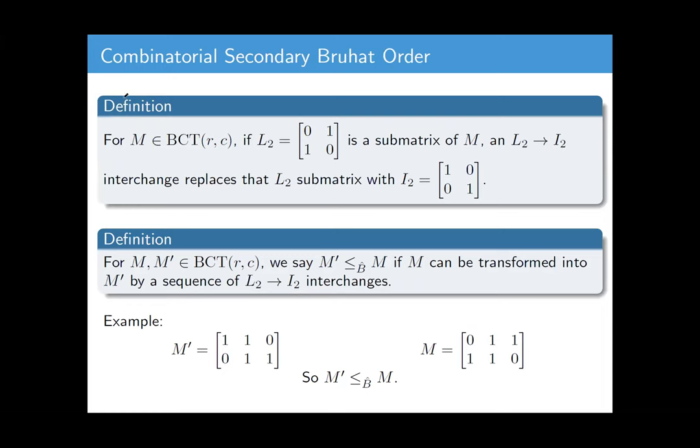Here's another one. I'm going to call this one the secondary Bruhat order. Here's the idea. If I, in one of my BCTs, see a submatrix that looks like 0,1,1,0, if I replace that submatrix with 1,0,0,1, I call that an L2 to I2 interchange. And so here's an example. In this matrix, I see a 0,1 and a 1,0. I could do an interchange to change that. So if I can do a sequence of these moves to get from M to M prime with L2 to I2 interchanges, we say M prime is less than or equal to M in the secondary Bruhat order.